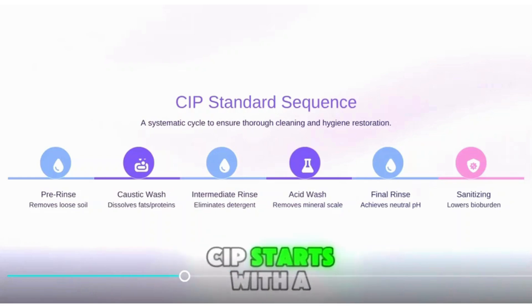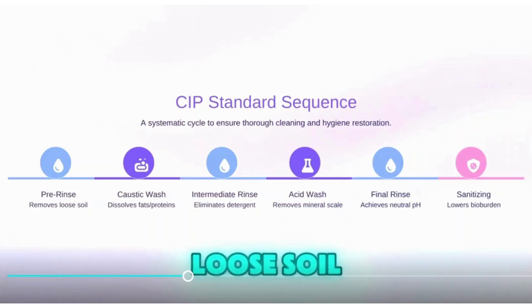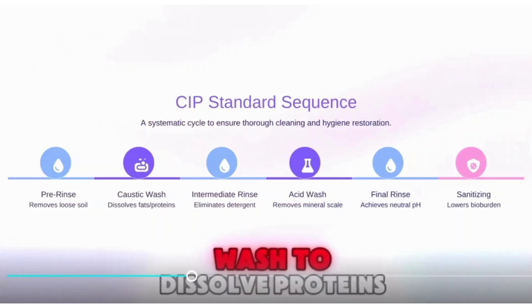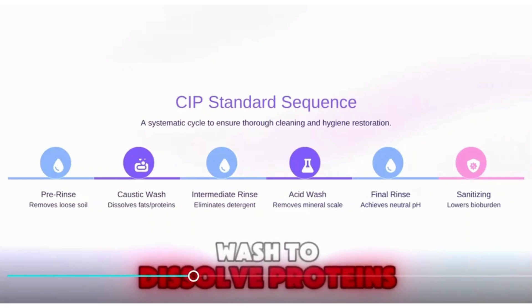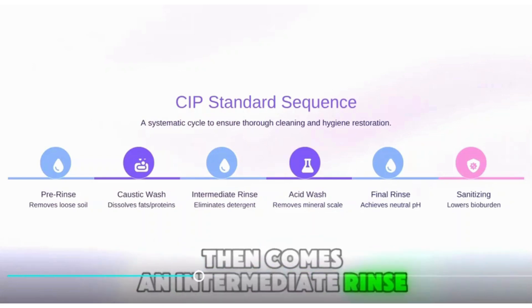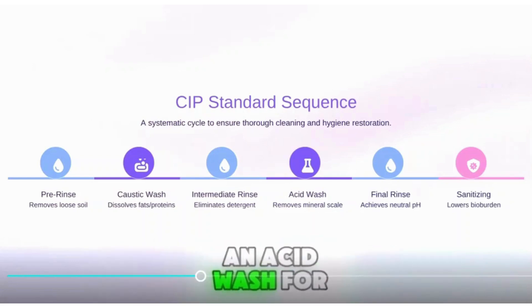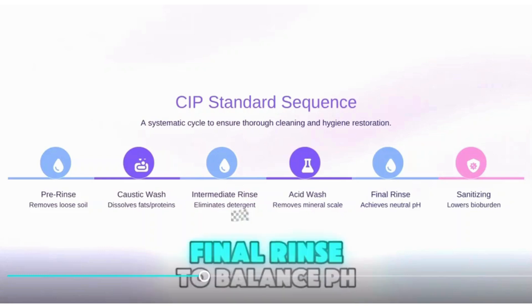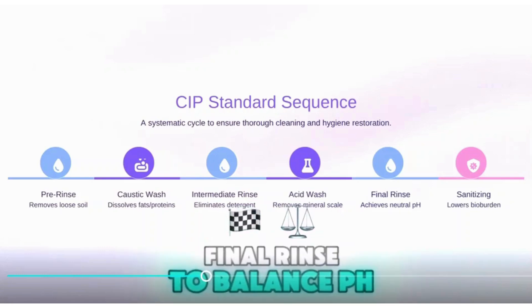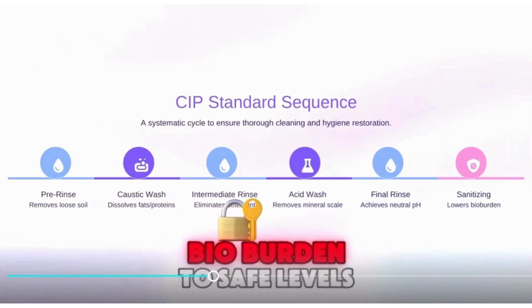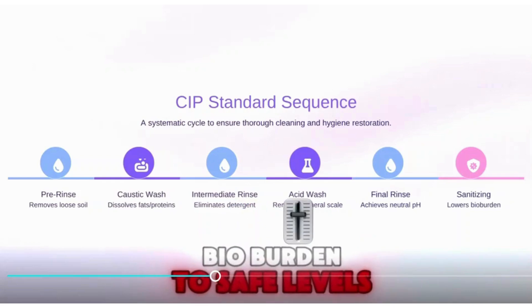CIP starts with a pre-rinse to remove loose soil, followed by a caustic wash to dissolve proteins and fats. Then comes an intermediate rinse, an acid wash for mineral scale, and a final rinse to balance pH. Finally, sanitizing lowers the bio-burden to safe levels.